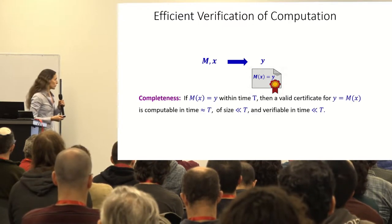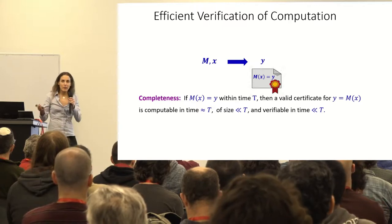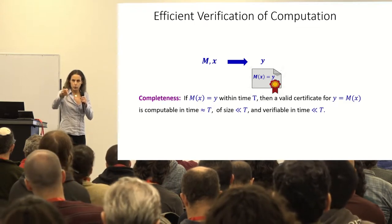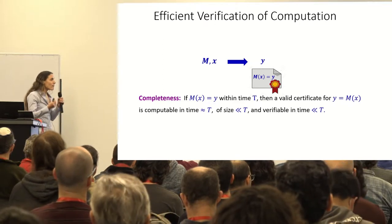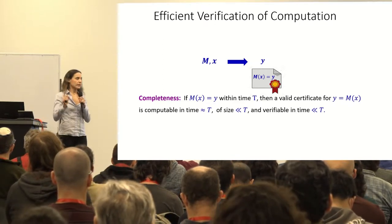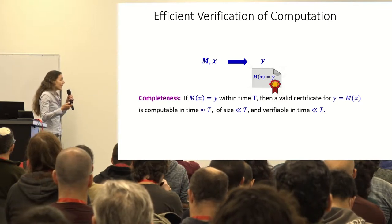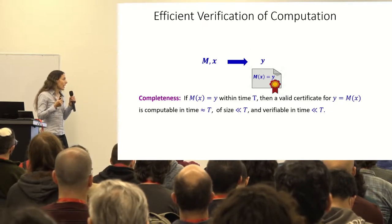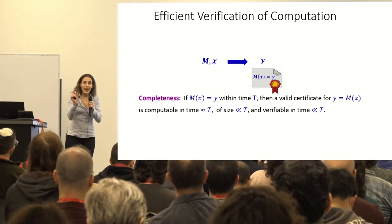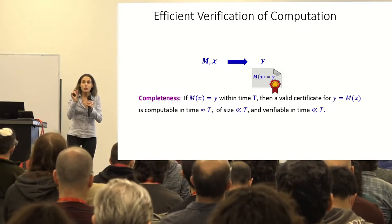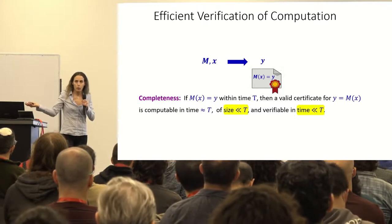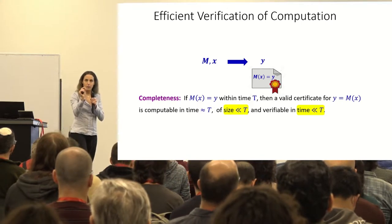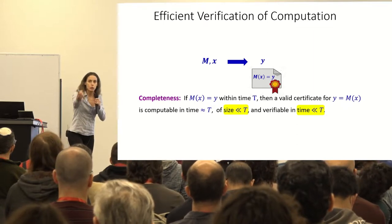Crucially, this certificate should be succinct, efficient to verify, and hard to forge — meaning it's not easy to produce certificates for incorrect statements. Typically we have completeness and soundness conditions. Completeness says that if I do a time-T computation, I can generate a valid certificate — one that will be accepted for the output — in time not much more than T. The certificate size and verification time should be much less than T.